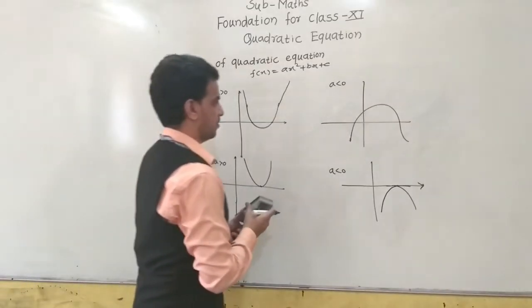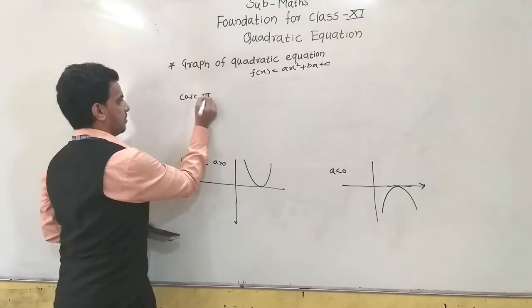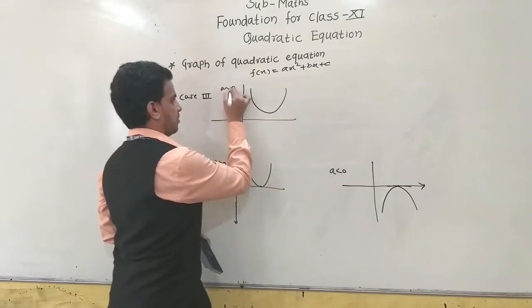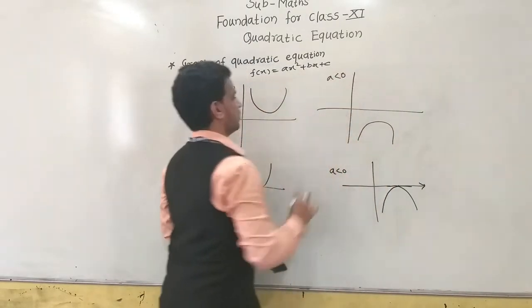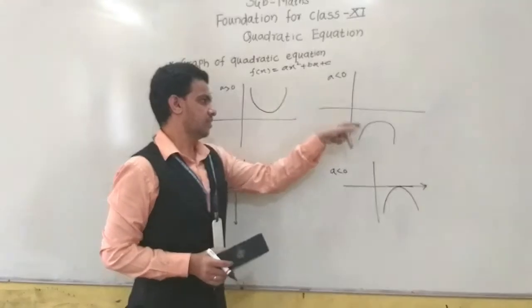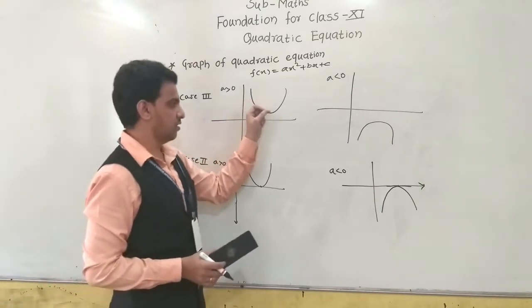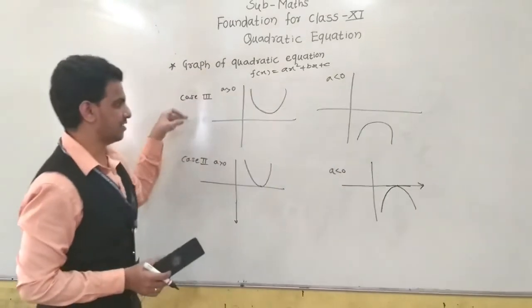Case 3: if the parabola does not cut the x-axis at all — for a > 0 the parabola is entirely above the x-axis, and for a < 0 it is entirely below. In this case, we do not get real roots; we can only get complex roots.